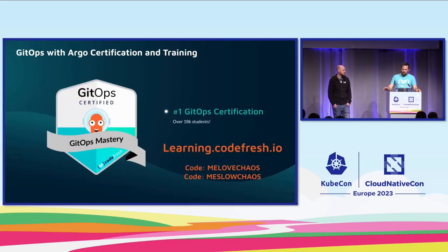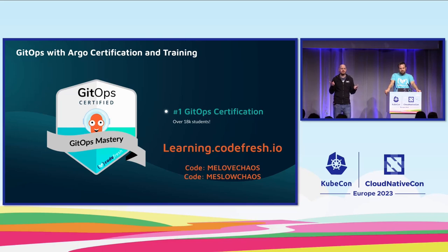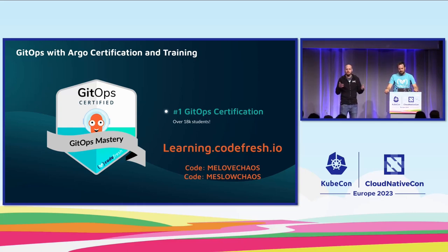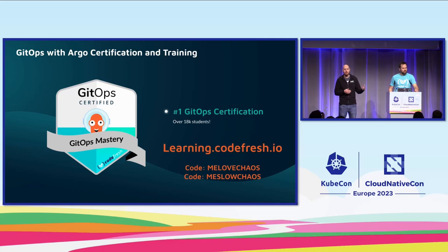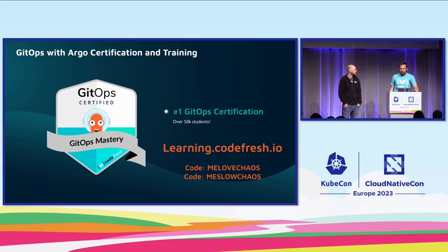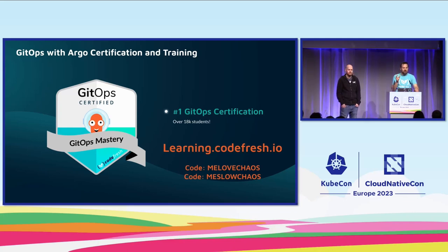You should also check out our GitOps certification. We have two different levels — the primary level covers the basics plus rollouts, canary and blue-green deployments. The second level does a deep dive into things like the pull request generator, other generators, how to organize your repositories — you can't get to this kind of scale if your repositories don't make sense. We have two codes: 'melovechaos' for 100% off — certification is free — and for those who didn't catch it, 'meslowchaos' for 50% off. Come by the Codefresh booth and they'll give you some codes.